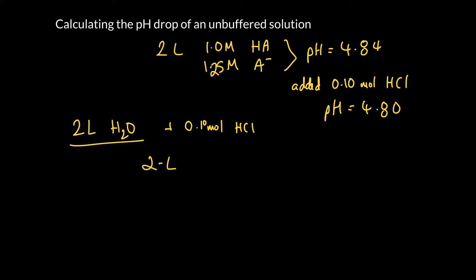So if we start with 2 liters of water we can see that the pH is going to be exactly 7 because it's a neutral solution. And so the question is if we add 0.1 moles of HCl to 2 liters of water what will the pH be?